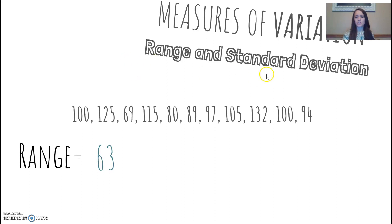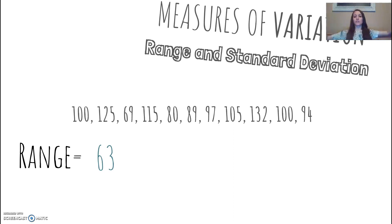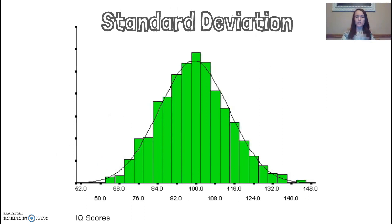Another measure of variation is standard deviation. The word 'deviation' means to go away from something — if you deviate from the rules, you're breaking them, going away from them. So with standard deviation, we want to see how far away our data points are getting from the mean. I want to show you how we would plot IQ and then find the standard deviation.